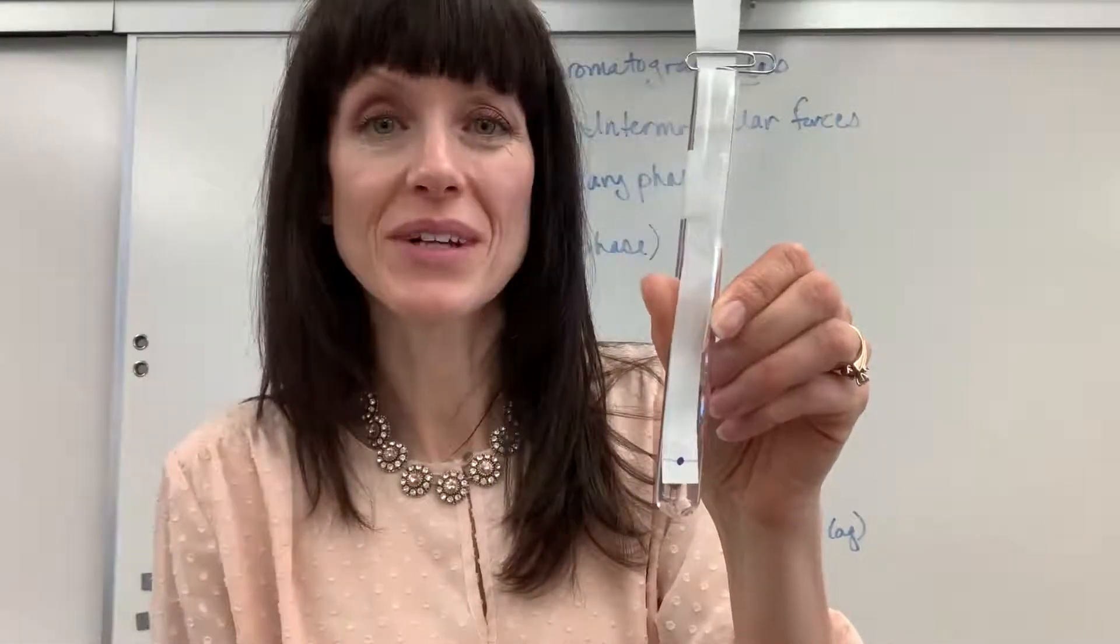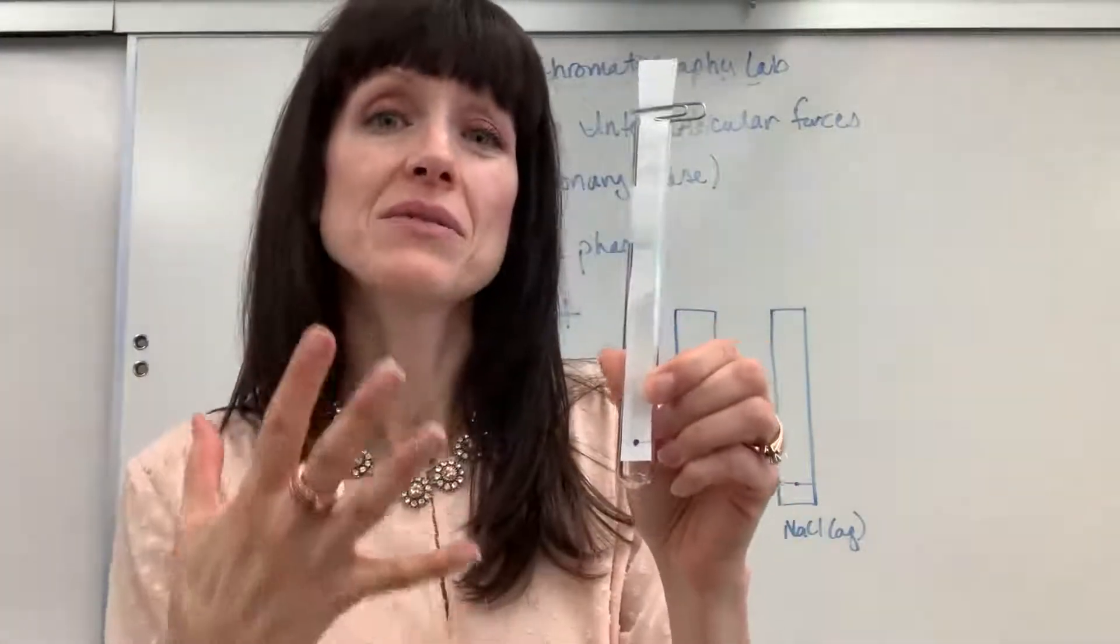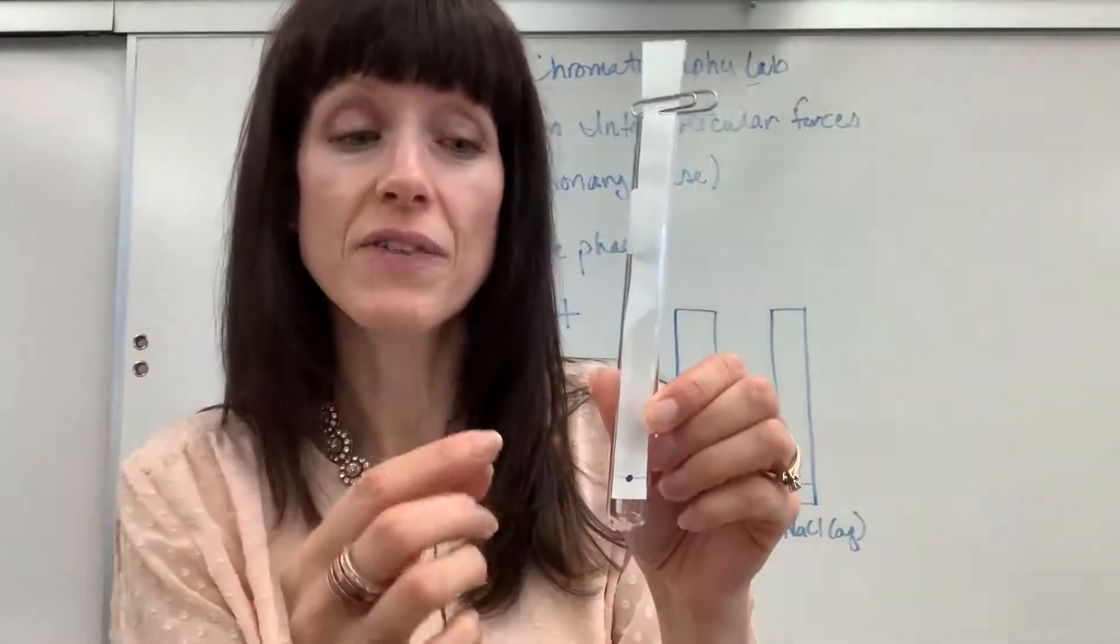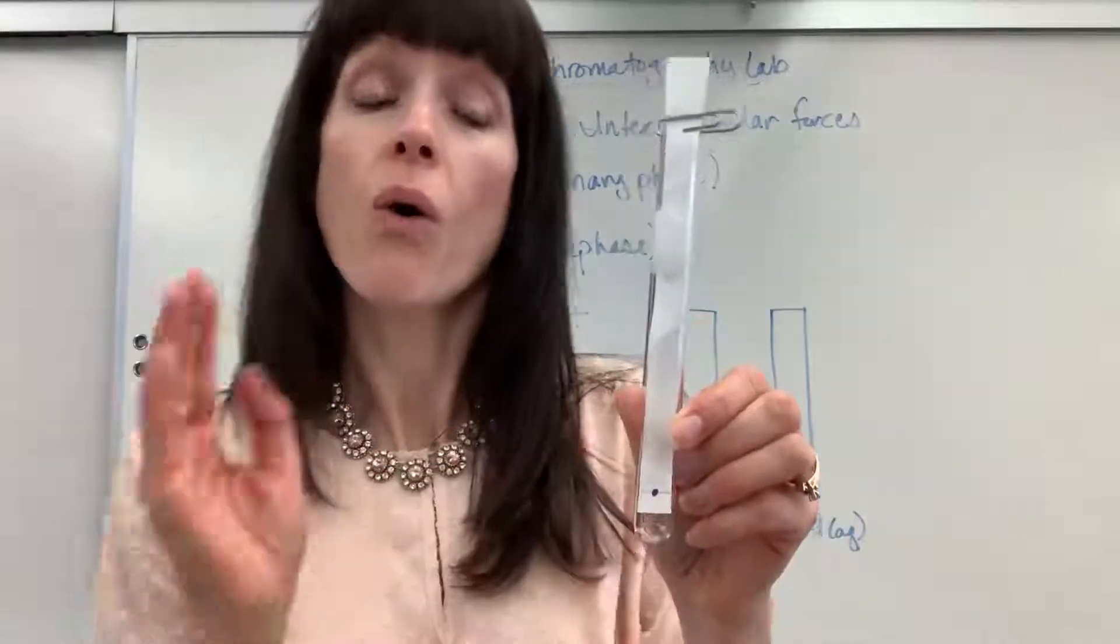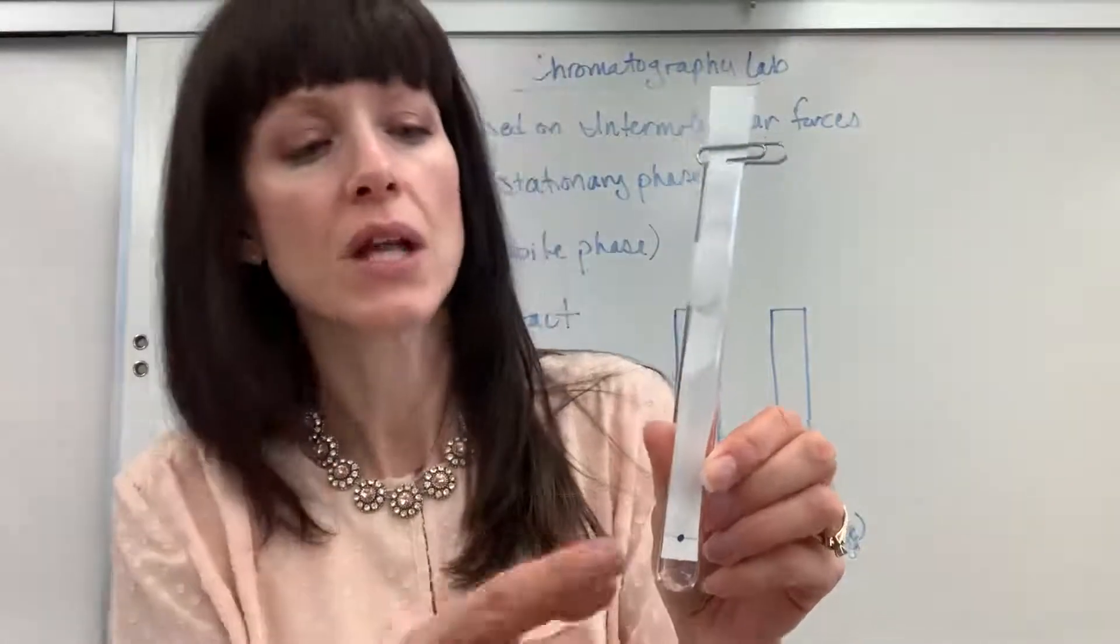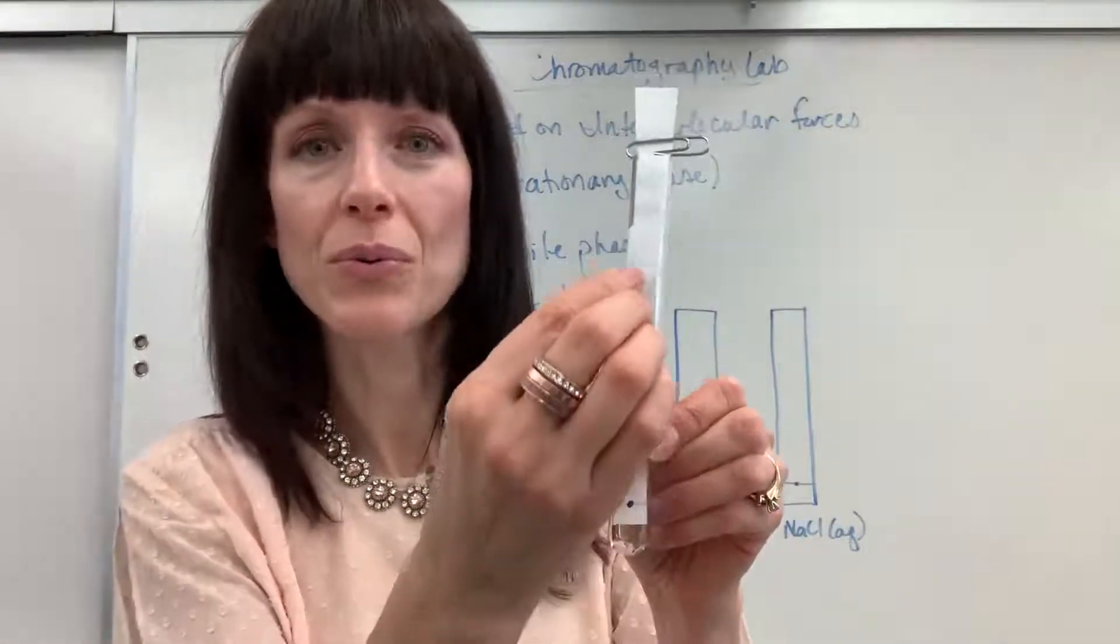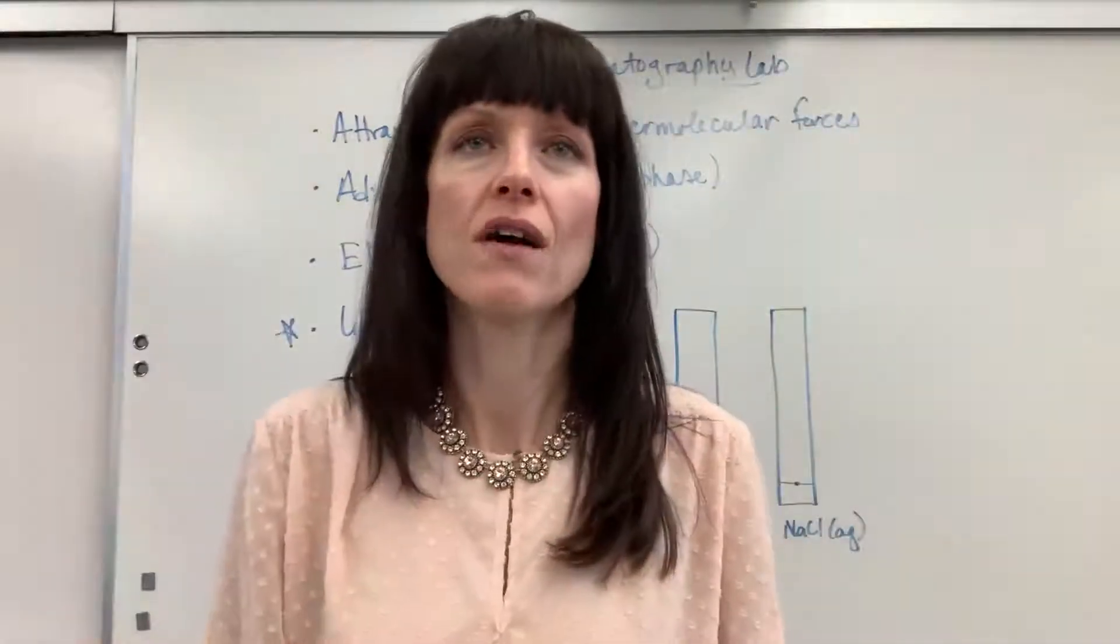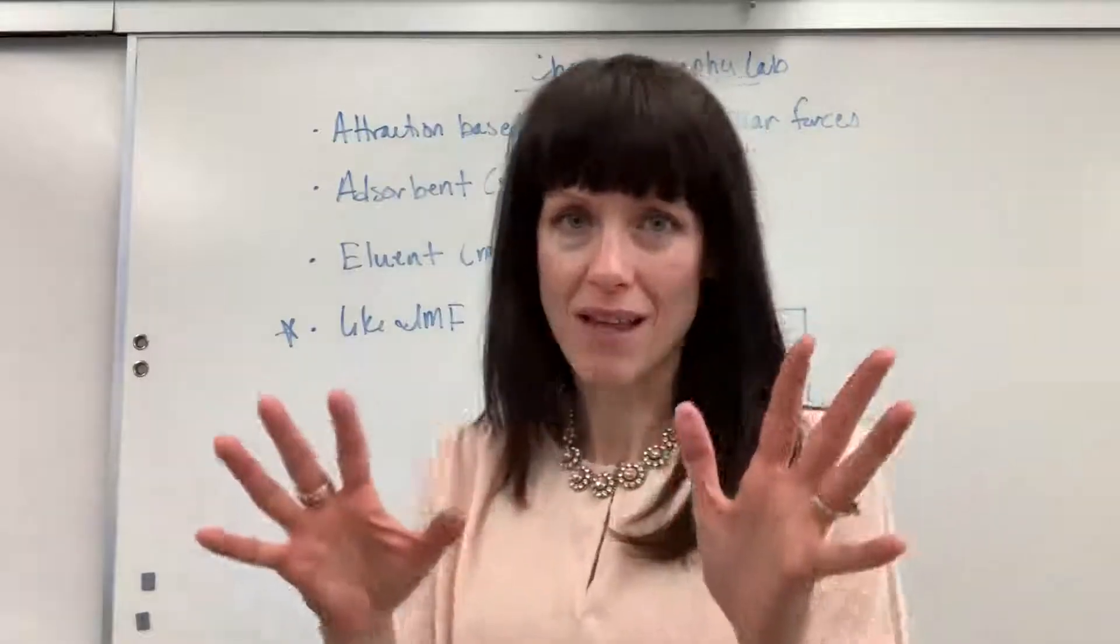Now, one of two things is going to happen. Either this dot right here, the dye, is going to be really attracted to the paper itself, the stationary phase. If it is, that color will stay low on the paper. Or it's going to be really attracted to the mobile phase, the solution. And as the solution absorbs, the little dye will move up with it. So I'm going to give you, this is totally a pretend scenario, I'm just making this up.